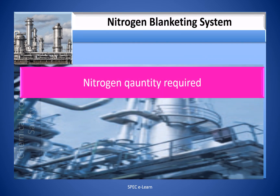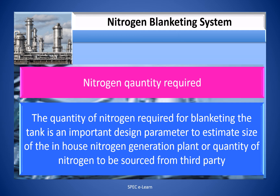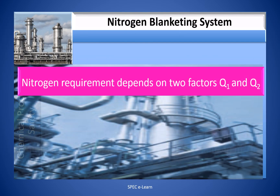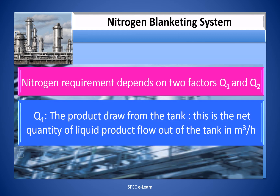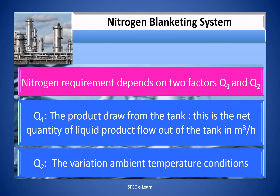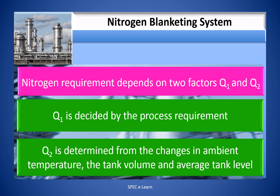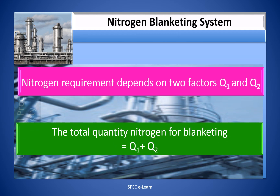Nitrogen Quantity Required: The quantity of nitrogen required for blanketing the tank is an important design parameter to estimate the size of the in-house nitrogen generation plant or quantity to be sourced from third-party. Nitrogen requirement depends on two factors. One, the product draw from the tank — the net quantity of liquid product flowing out of the tank in cubic meters per hour. Two, the variation of ambient temperature conditions. Q1 is decided by the process requirement, Q2 is determined from the changes in ambient temperature, the tank volume, and average tank level. The total quantity is Q1 plus Q2.